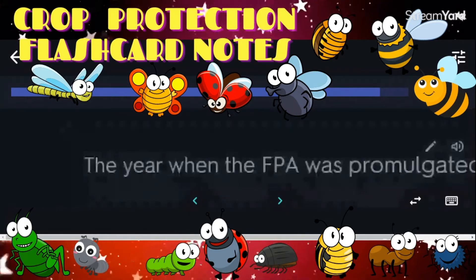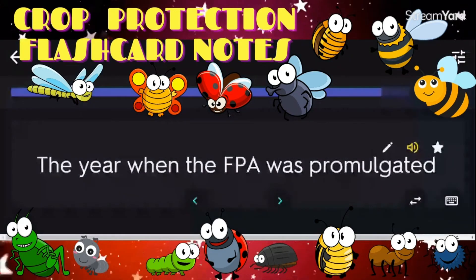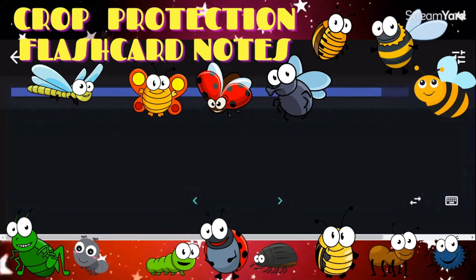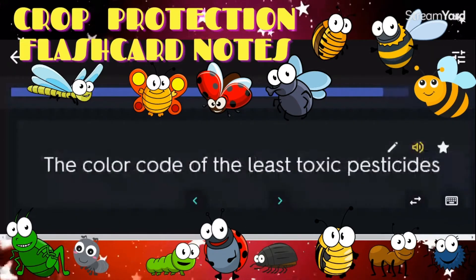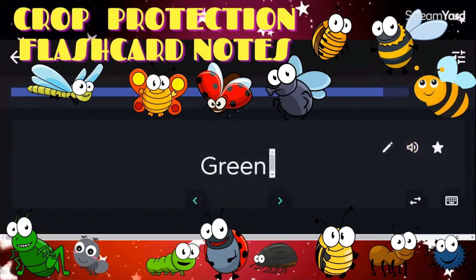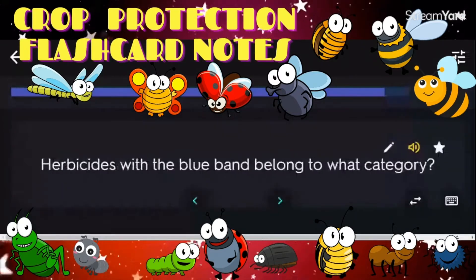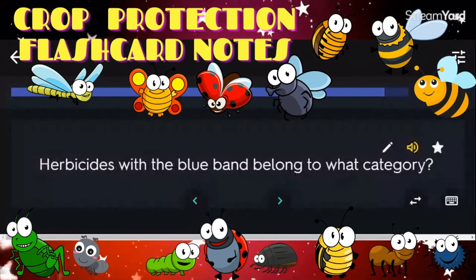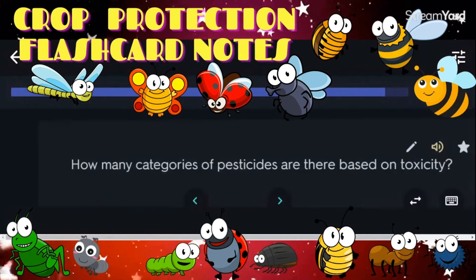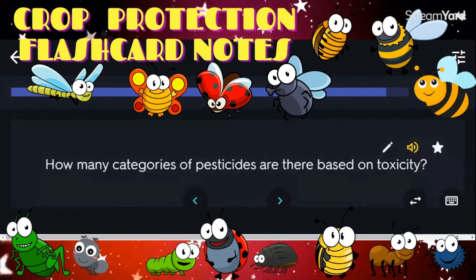The year when the FPA was promulgated: 1977. The color code of the least toxic pesticides: green. Herbicides with a blue band belong to category 3. How many categories of pesticides are there based on toxicity? Four.